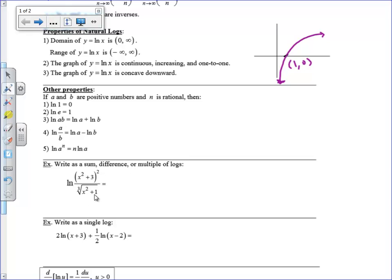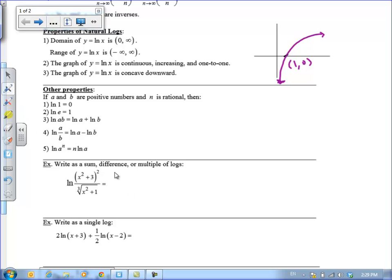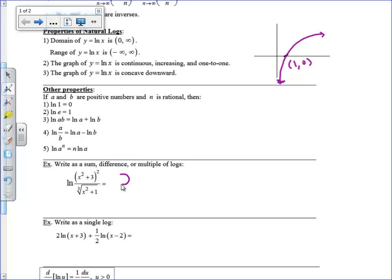You can take a pretty complicated logarithm and expand it out, and we're going to really be thankful for this whenever we start doing derivatives. So I can rewrite this as 2, let me get my pen working there, natural log of x squared plus 3. And the rule that I just invoked there was rule number 5. If you have an exponent on a base, you can bring it down and multiply it times the natural log.